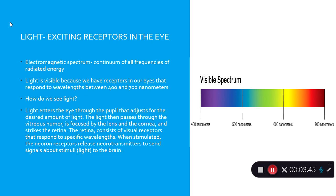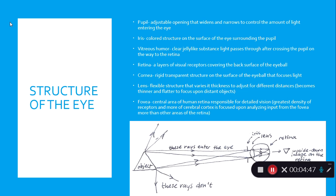Light enters the eye through the pupil, which adjusts for the desired amount of light. It passes through the vitreous humor, is focused by the lens and cornea, and strikes the retina. The retina consists of visual receptors that respond to specific wavelengths. When stimulated, the neuron receptors release neurotransmitters to send signals about stimuli to the brain.